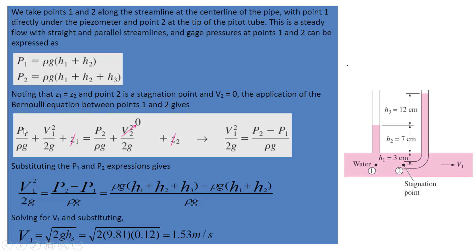What's left is P1 over gamma plus V1 squared over 2G equal to P2 over Rho G. We rewrite the equation. Since we want to find V1, V1 squared over 2G equals P2 minus P1 over Rho G. In this case, 2G is known, Rho G is known — just 1000 times 9.81 — and P2 and P1 values are given. But they give us the Pitot tube heights. So how do we find pressure at points 1 and 2?